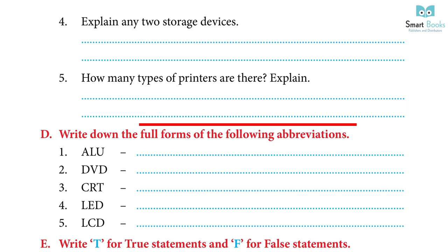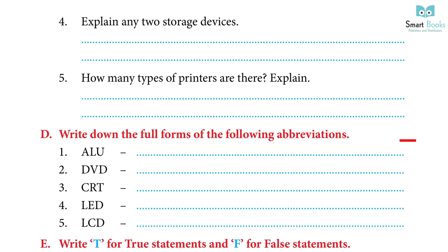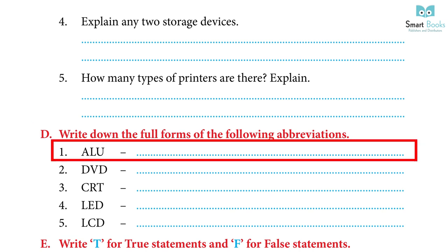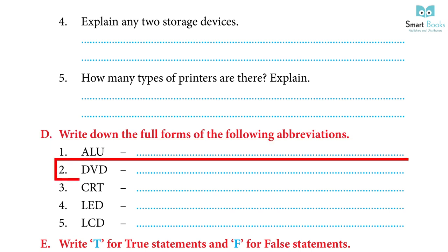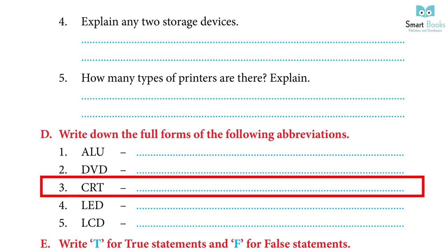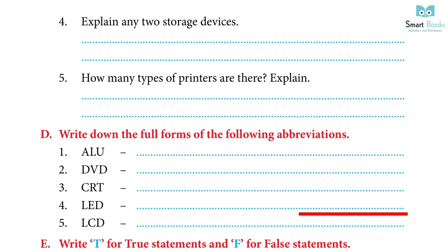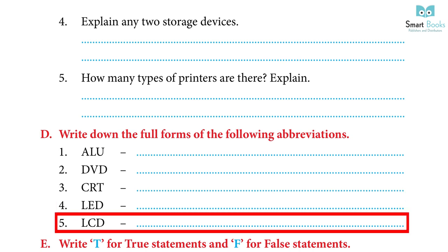D. Write down the full form of the following abbreviations: 1. ALU stands for Arithmetic and Logic Unit. 2. DVD stands for Digital Versatile Disk. 3. CRT stands for Cathode Ray Tube. 4. LED stands for Light Emitting Diode. 5. LCD stands for Liquid Crystal Display.